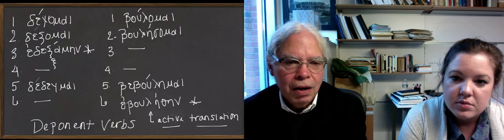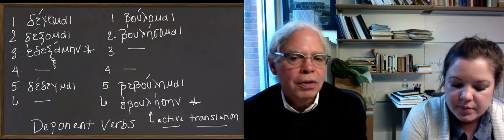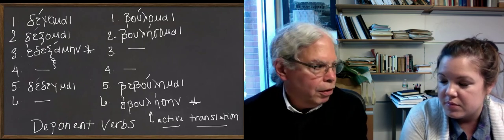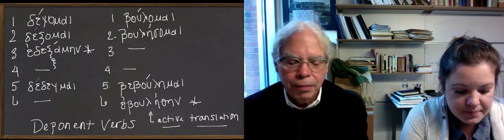It's just some verbs have an aorist passive, which functions as its aorist. Some deponent verbs have that, and some have no aorist passive, but an aorist middle form that functions as its aorist.